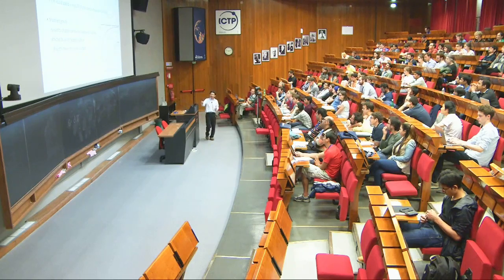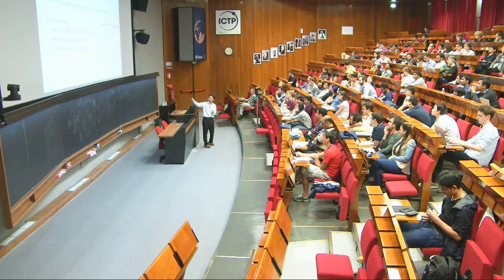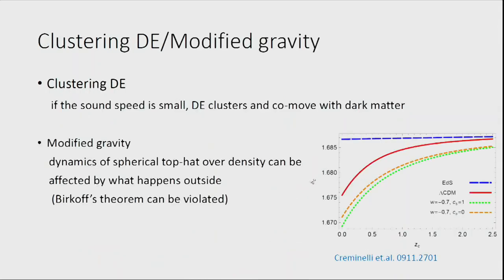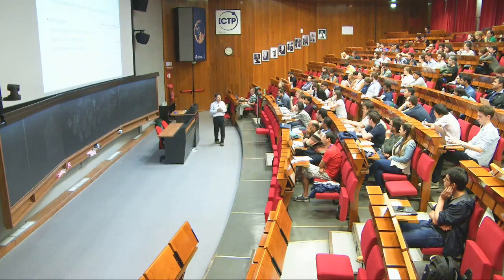In modified gravity, the Birkhoff theorem basically does not hold — you have to worry about what happens outside the spherical shell, not just the mass inside. These calculations become difficult, but you can still get some indication of what happens at nonlinear scales. The spherical collapse model has limitations here, but is still a useful guide.